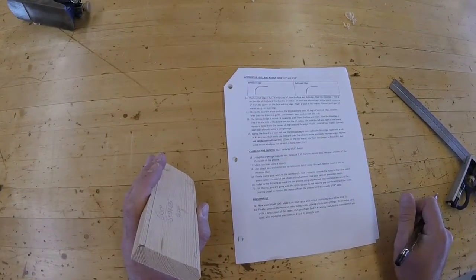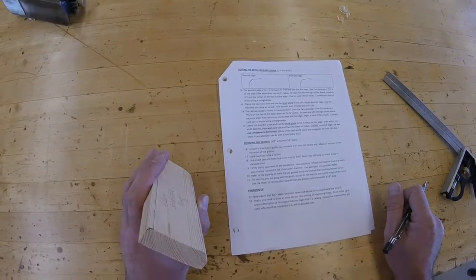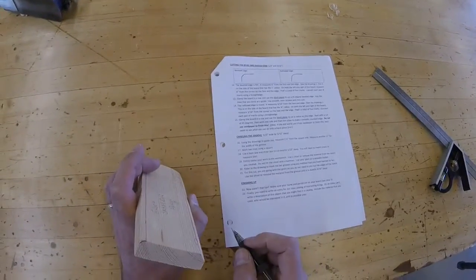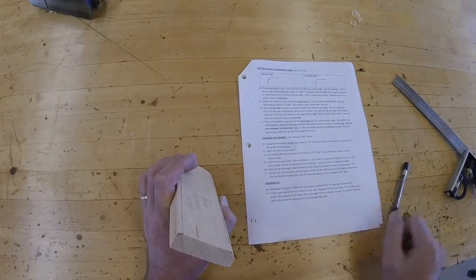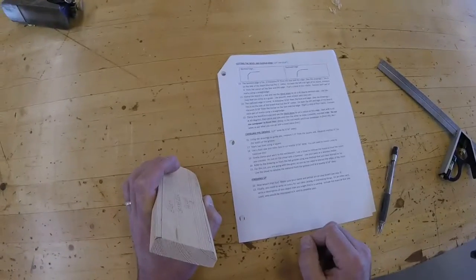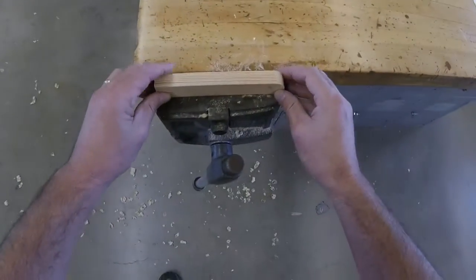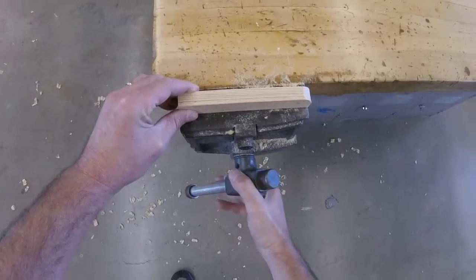Step 15 says, clamp the board on a vise and use the block plane to cut a radius on this edge. Start with a cut at 45 degrees, like we did here. Then work to one side and the other to make a smooth rounded edge. Do not use sandpaper to finish this. In the real world you'd use sandpaper to finish this. But I want to see what you can do with a hand plane first. So we'll put this into our bench vise. Lock it in gently.